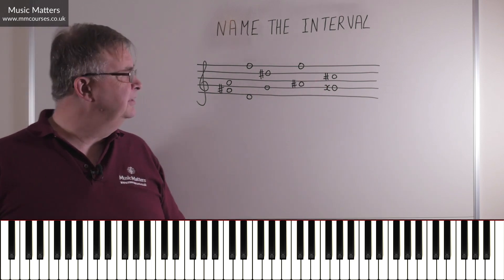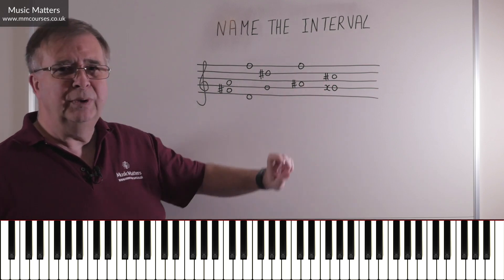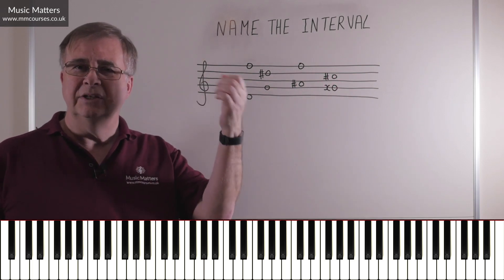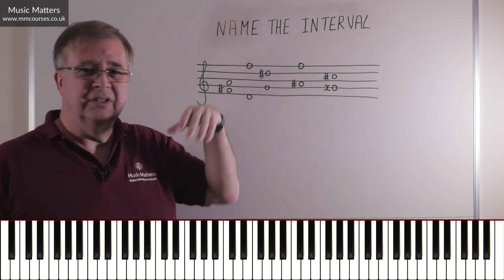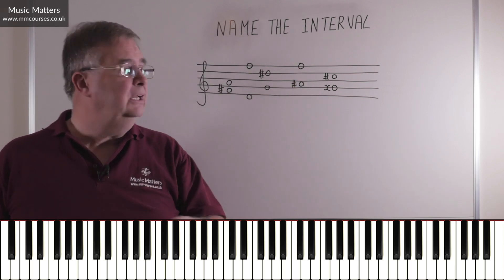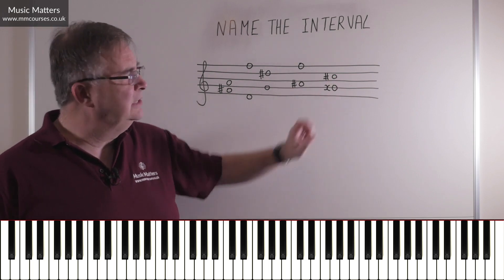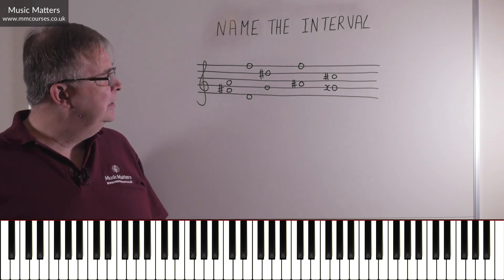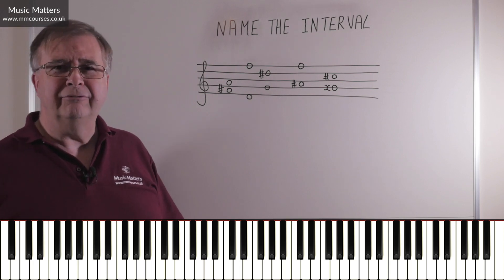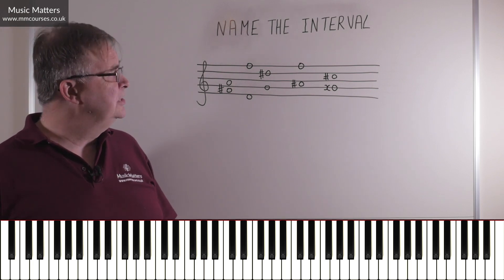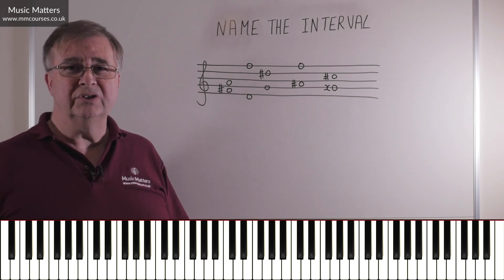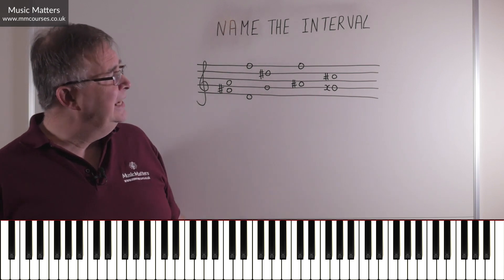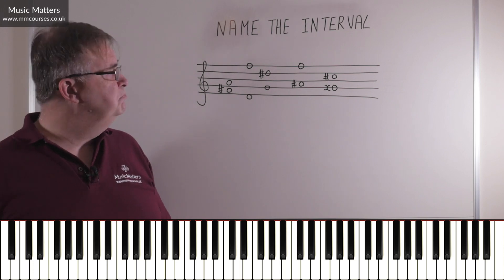And the last one — this is looking a bit funny, we'll come back to that sign in a moment. Let's work out the number: one, two, three, four — some kind of G to some kind of C. G, A, B, C — that's four, so this is a fourth. You're always counting the lower note as number one. As to what kind of fourth it is, here comes the challenge — and this is a diminished fourth.